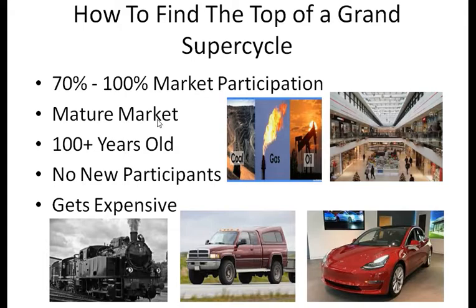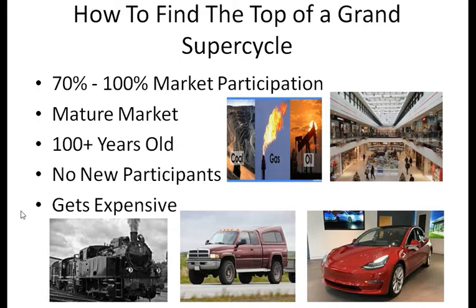Another indicator is a mature market — about 100 plus years old. And there are no new participants. If you've got 70 to 100% of the population already using it or buying it, you don't really have room for new growth. Also, it can get very expensive to use near the end because it gets inefficient, or there are too many laws and regulations, or people have already begun to jump ship and move on to something else.